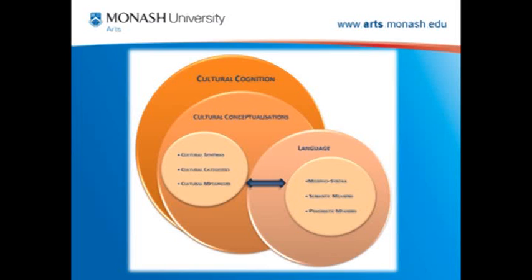The relationship between cultural cognition, cultural conceptualizations, and language is best captured in a diagram where you have at the background the macro-level of cultural cognition, then cultural conceptualizations, and then features of language entrenched in those conceptualizations. Units such as cultural schemas, cultural categories, and cultural metaphors are closely associated with features of language — encoding syntactic features, semantic meaning, pragmatic meaning, and discourse structure.